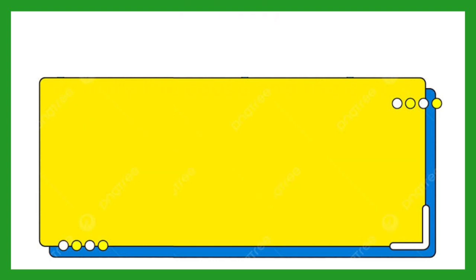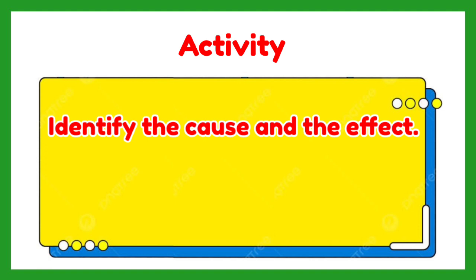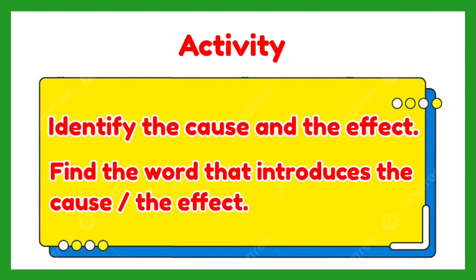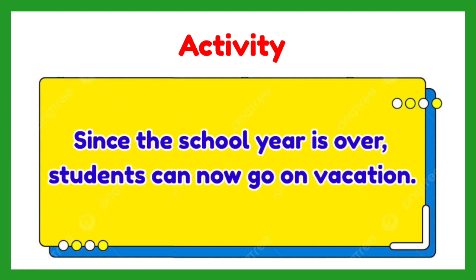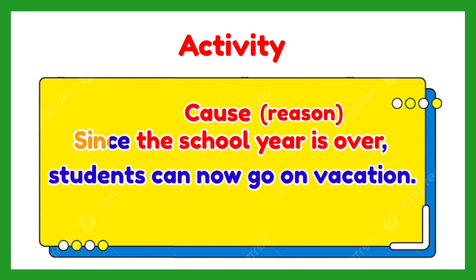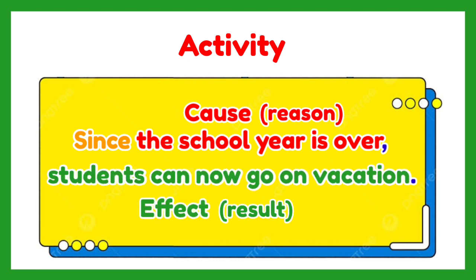Now try to identify the cause and effect in each sentence, and find the word used to introduce the cause or the effect. Let's start. 'Since the school year is over, students can now go on vacation.' The cause is: the school year is over — it is the reason why students can now go on vacation, introduced by the word 'since.' The effect is: students can now go on vacation, which is the result of the completion of the school year.